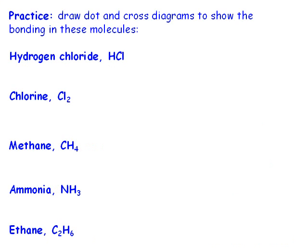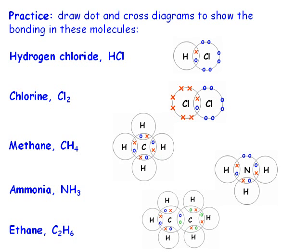Practice drawing some dot and cross diagrams yourself. Remember that each overlap between the outer shells should contain one dot and one cross, then fill in any outer shell electrons which have not been shared. If you aren't sure how to arrange the atoms, put the one with the largest valency in the middle, then bond the other atoms to this, remembering that the valency of these atoms is also the total number of covalent bonds it will form. Pause the video now and have a go.